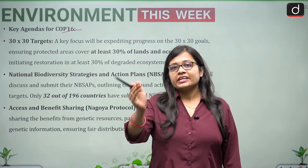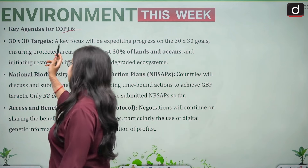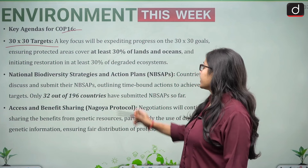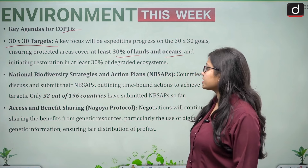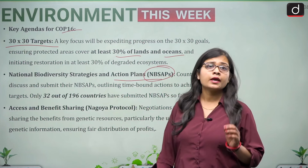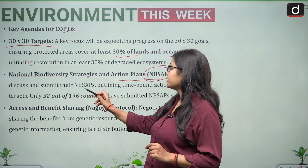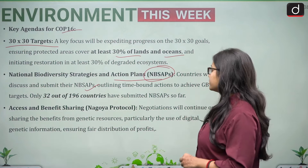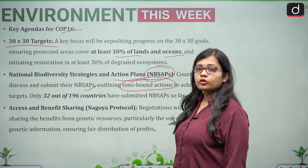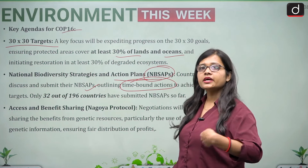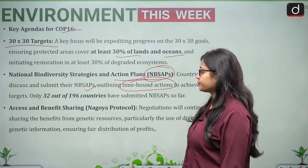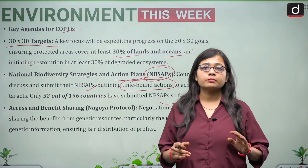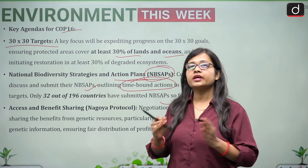Key agendas for COP 16 include the 30x30 target — protecting at least 30% of land and ocean by 2030 — and National Biodiversity Strategies and Action Plans (NBSAPs), where countries submit their national plans with time-bound actions. So far, only 32 out of 196 countries have submitted NBSAPs, as assessing performance against biodiversity targets is challenging.